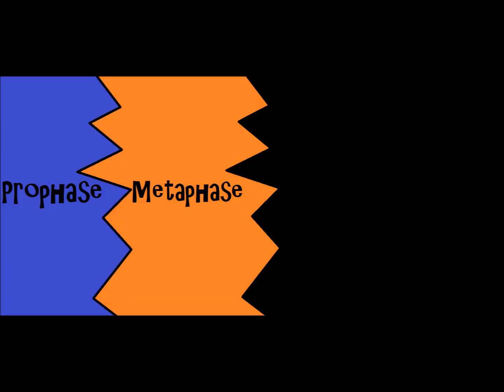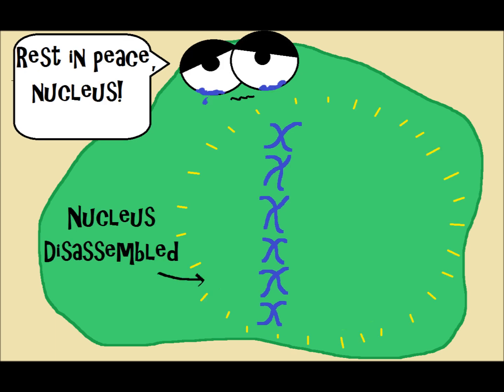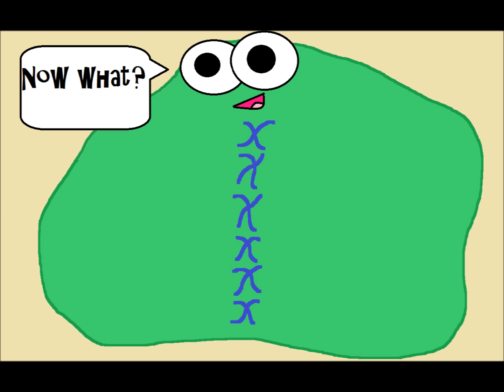The next stage is metaphase — M for metaphase. I also like to remember the M for middle, because in this stage the chromosomes line up in the middle of the cell. The nucleus has been disassembled — it's no longer there. So we've got the chromosomes in the middle, waiting there to be pulled apart for the next stage.